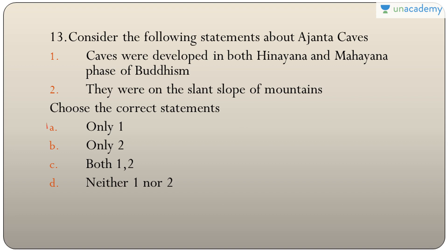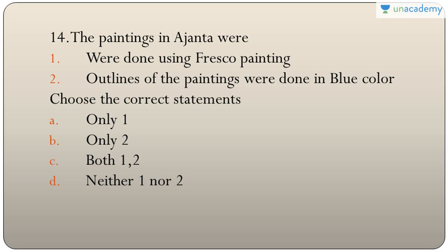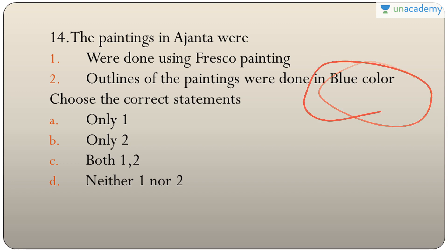Question fourteen: paintings in Ajanta were done using fresco painting, and outlines were done in blue color. Fresco painting is correct, but outlines were done in red, not blue. Interestingly, blue color is nowhere used in Ajanta paintings. The answer is A — only one.